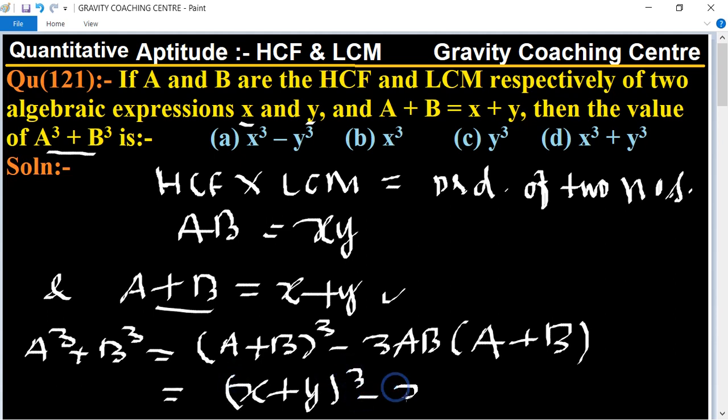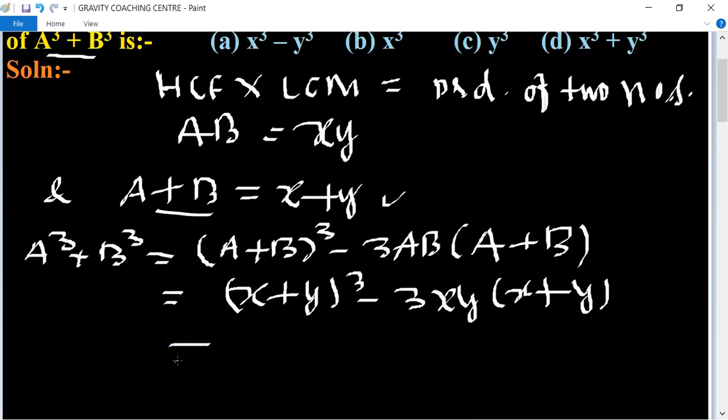minus 3AB equals xy, and bracket of A + B equals x + y. So this one is the identity of x^q + y^q, which is the required answer.